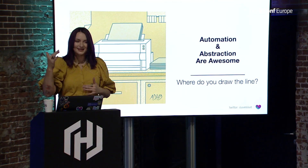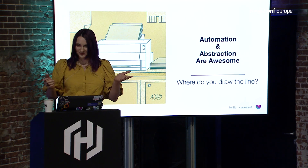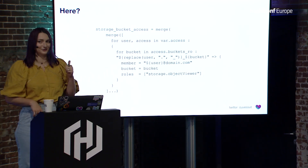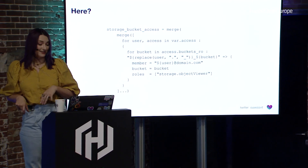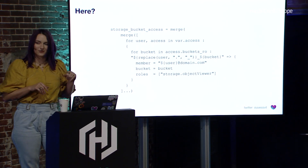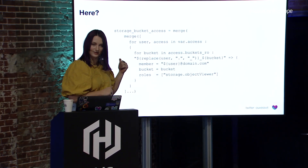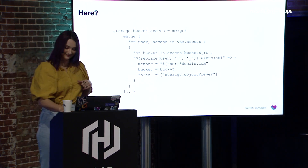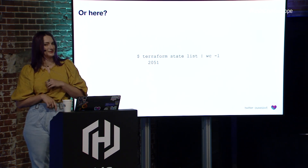So we build these layers upon layers upon layers of abstraction and automation — but where do we draw the line? Is it here? This is a very valid, very functional piece of Terraform that takes some sort of input and transforms it into a different kind of map. I particularly like the three dots down below — I call it black magic. It gives me comfort in answering the question 'how does this work?' with 'I have no idea,' because the code suggests that it also has no idea. Or is this where we draw the line? Imagine debugging something in 2,000 resources.